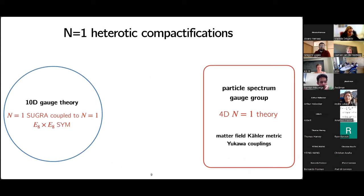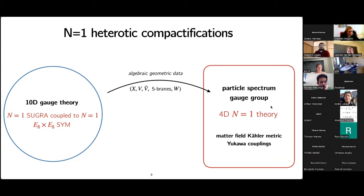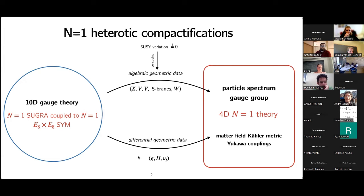In an N=1 heterotic compactification we have a 10D gauge theory — the low energy supergravity limit — which we use to construct our 4D N=1 theory. The particle spectrum and gauge group are given by algebraic geometric data: the manifold X, the bundle V, possibly some fibrations and a Wilson line, giving the particle spectrum in terms of cohomologies and gauge group from the structure group of the bundles. We also have differential geometric data — g, h, and μ — which determine the matter field Kähler metric and Yukawa couplings.